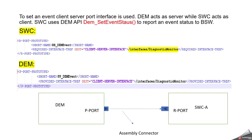When designing a software component that reports to DEM, according to the AutoSAR world, DEM acts as a server and the software component acts as a client. Whenever you want to make communication between DEM and the software component, you have to use the client-server interface. For example, the software component has an R port with a diagnostic monitor interface, and the DEM side will have a P port. The key point to remember is DEM will act as a server and the software component will act as a client.